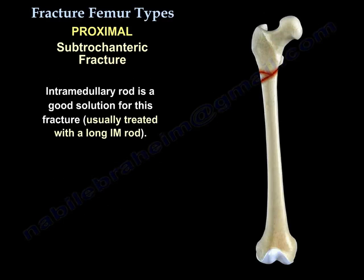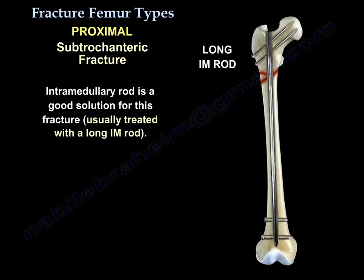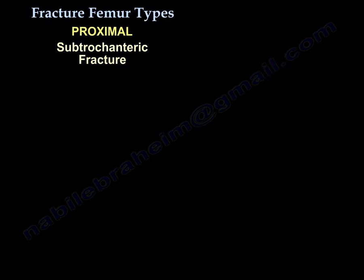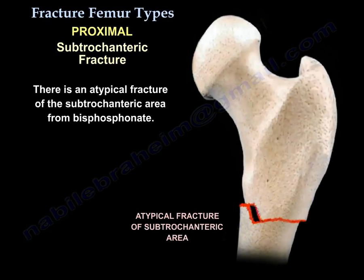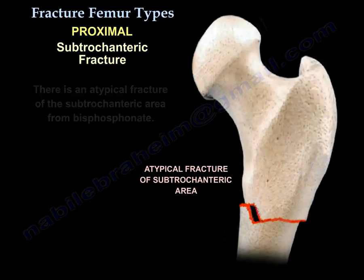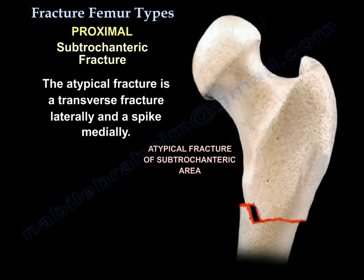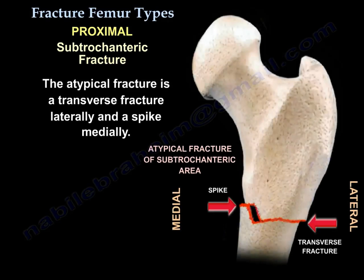An intramedullary rod is a good solution for that fracture, and it is usually treated by a long intramedullary rod. There is also an atypical subtrochanteric fracture from bisphosphonate use — it is a transverse fracture laterally with a medial spike.